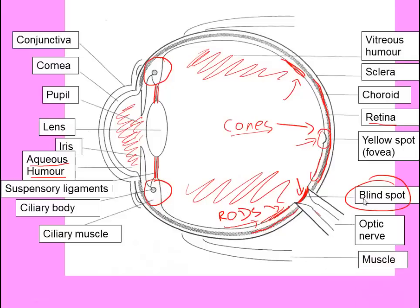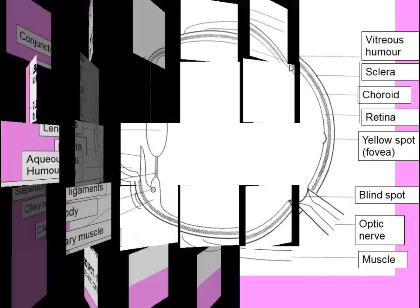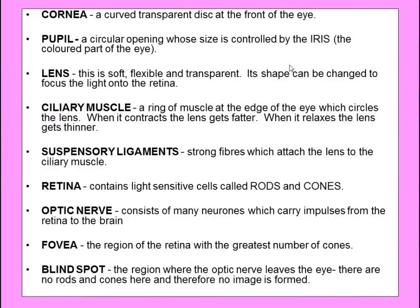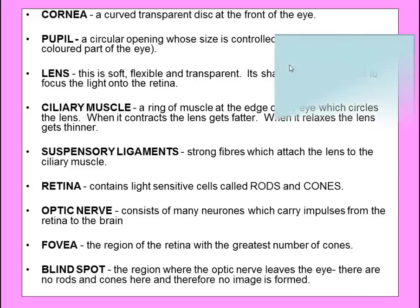Finally, there are lots of muscles which surround the eye. These help move our eyes in the direction we want them to point. There is also a sheet summarising the functions we've just talked about, so if you want to pause at this point and have a look, do feel free.